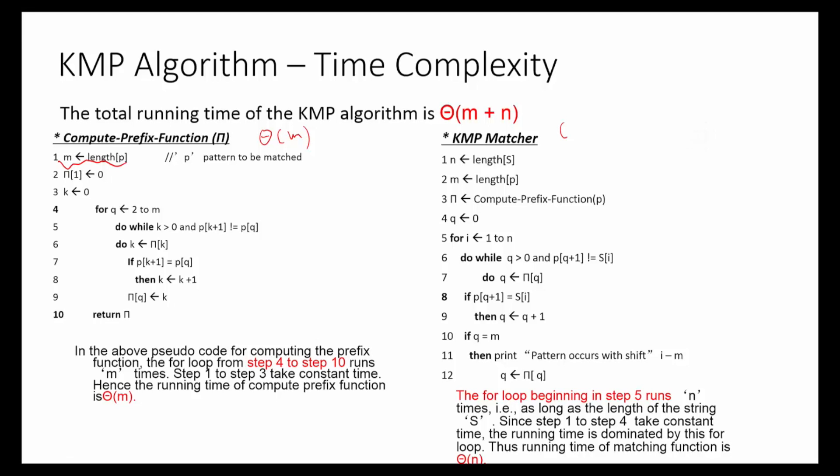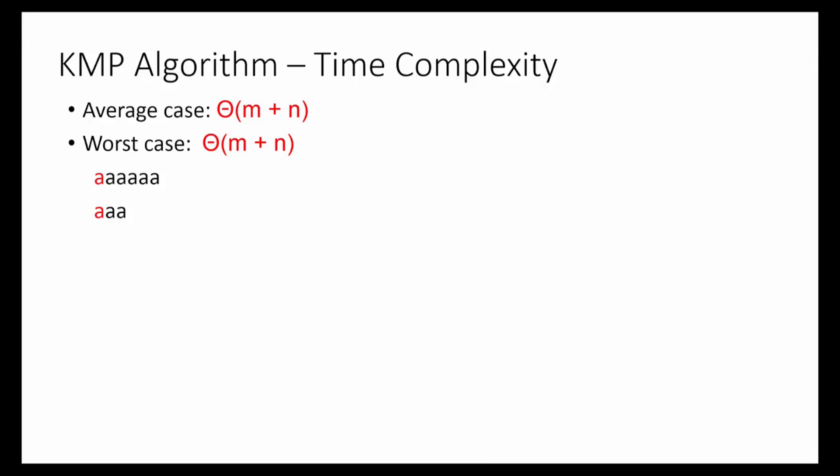It takes n time to go through the searching phase as it goes through each character of the text T once, which is the length n. The time complexity for the worst case and the average case are the same. An example of a worst case scenario is when it works like a naive algorithm and compares every character in the text once only. The KMP algorithm works best when the alphabet set is small.